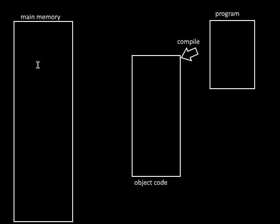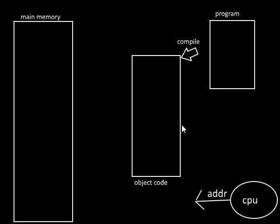The pages have to be relocated at runtime, but at compile time the compiler cannot predict what address each page will be loaded to in main memory. Hence, the compiler assumes that the process will get loaded to an address space starting from zero. Every address within the object code is generated with this assumption. Such addresses are called relocatable addresses.